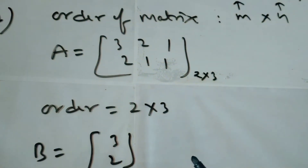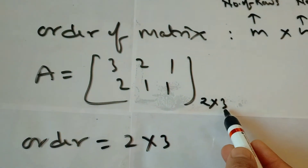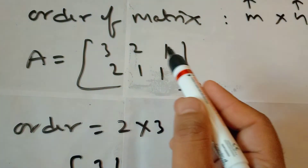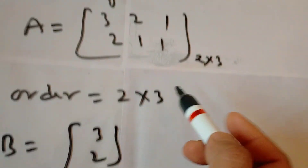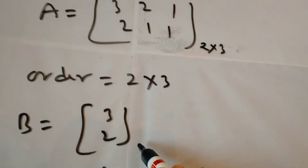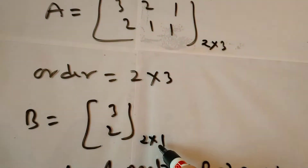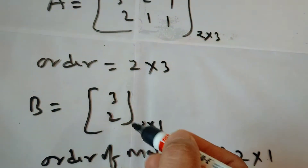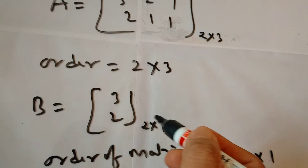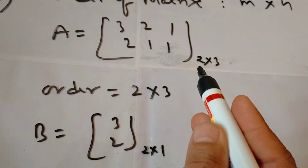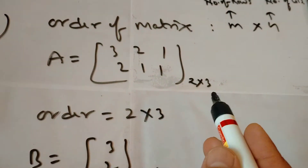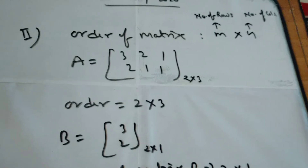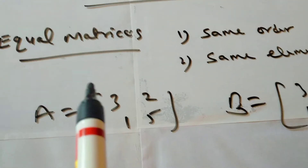If you multiply the two numbers in the order, you get the total number of elements in the matrix. For a 2 × 3 matrix, that gives six elements — one, two, three, four, five, six. For a 2 × 1 matrix, that gives two elements. So the first number in the order is the row count and the second is the column count.